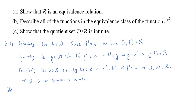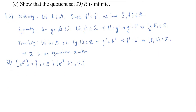What does 5b ask? Describe all of the functions in the equivalence class of e to the x squared. The equivalence class of e^(x²) is the set of all functions f in D such that (e^(x²), f) ∈ R. What does it mean that (e^(x²), f) ∈ R? It means they have the same derivative. So this equals all functions f in D such that the derivative of e^(x²) equals the derivative of f.